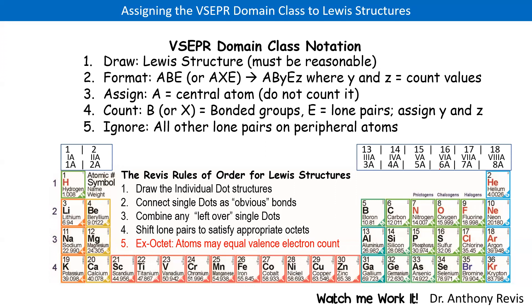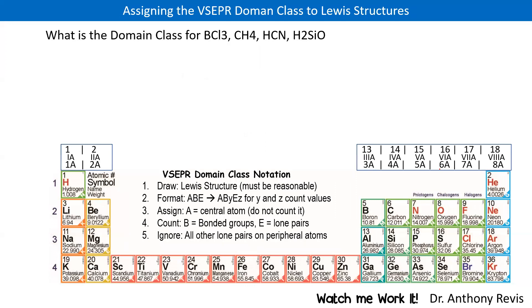For example, if there are two bonded groups around it, it'll have a B2. If there are three electrons, it'll have an E3. Be sure you ignore the other electrons. Now, if you're not familiar with how to draw a Lewis structure, see some of my other videos.